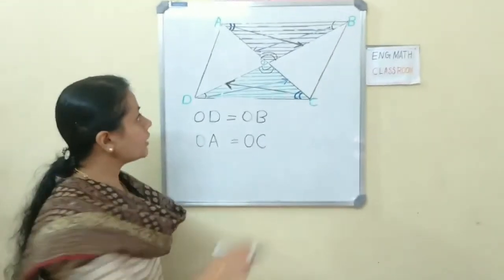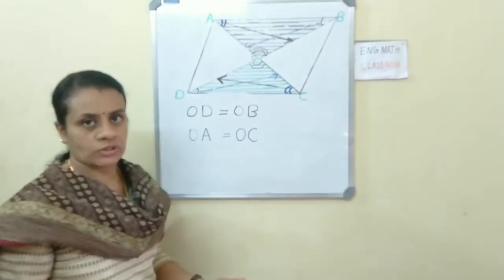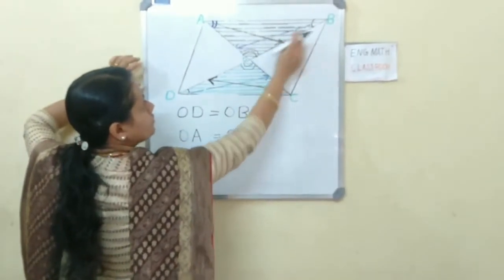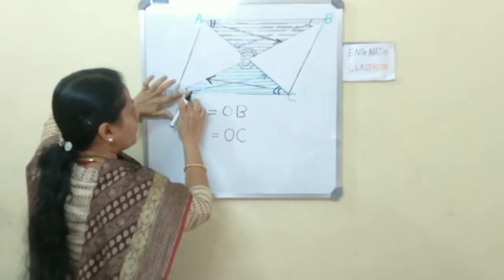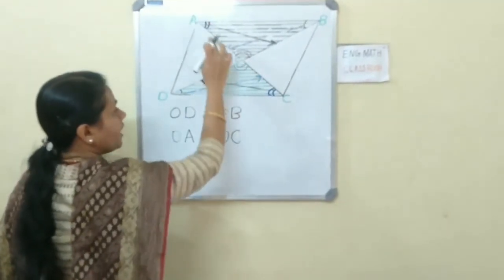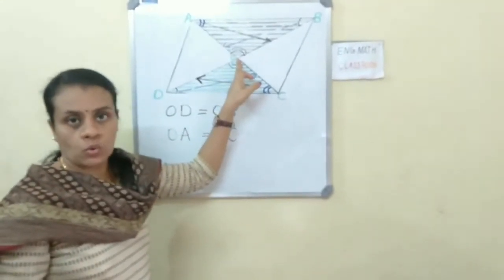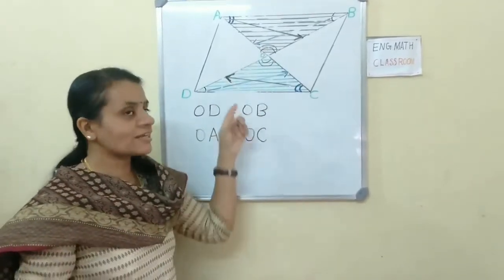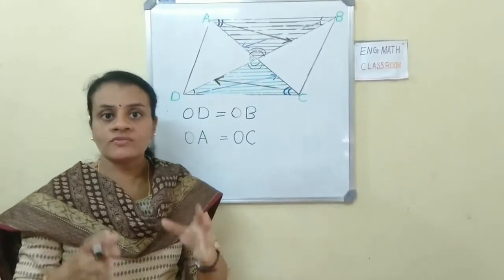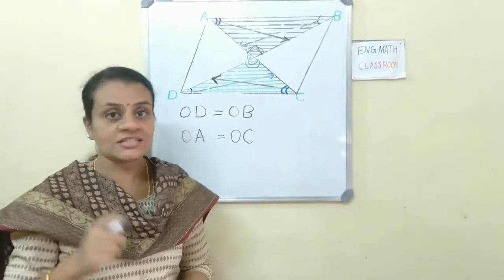Write it down. Angle ABO and angle CDO are equal. The side opposite to angle ABO is AO, and the side opposite to angle CDO is OC. So we can write OA equals OC. These two diagonals meet at the midpoint O. Now we have shown these two diagonals are bisectors.